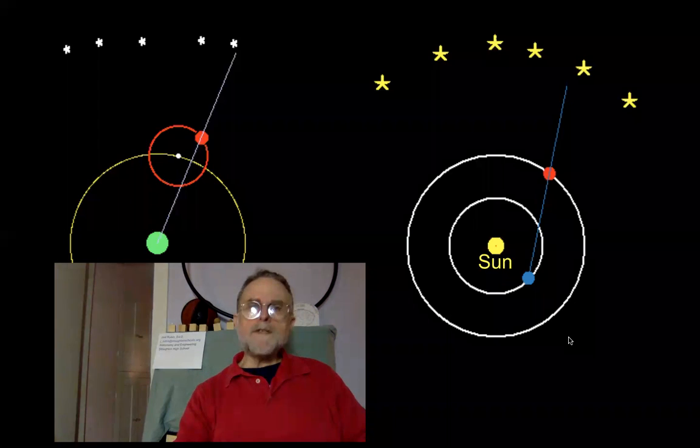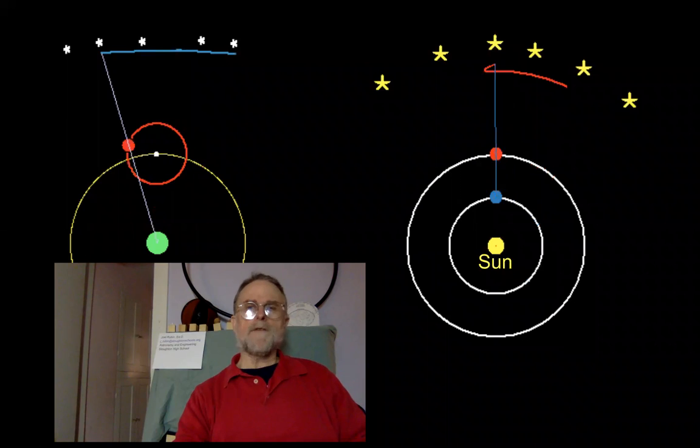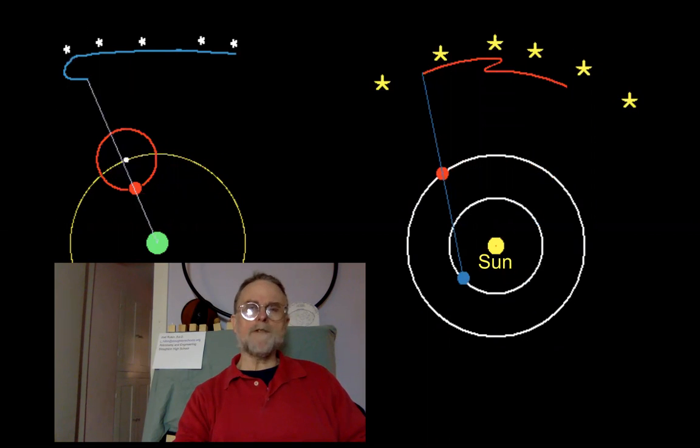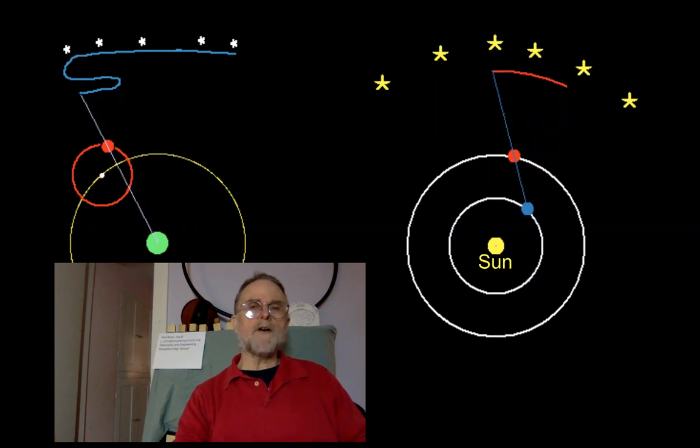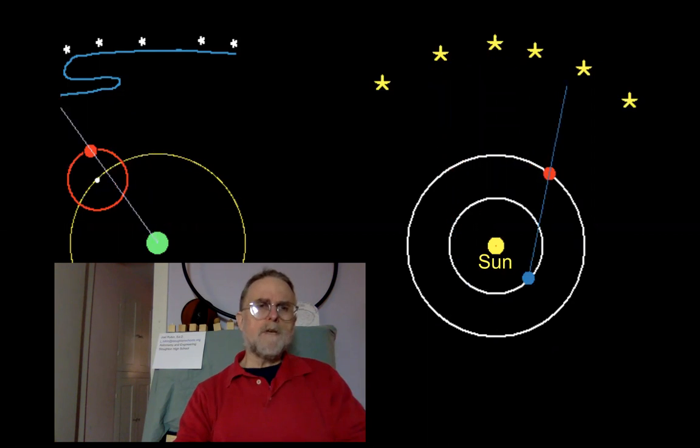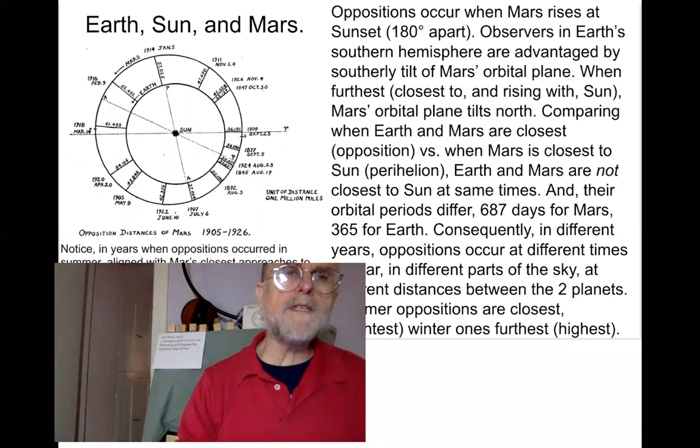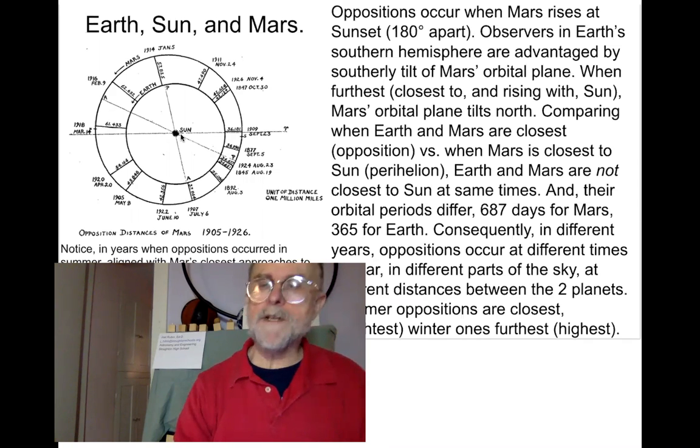Copernicus understood some things correctly, that the reason why planets appear to go backwards is because planets are passing Earth or vice versa, not because they're on loop-de-loops. But he still needed the loop-de-loops because he didn't accept the idea that planets were going faster when they were close to the sun and slower when they were further from the sun. That had to wait until Kepler came along.